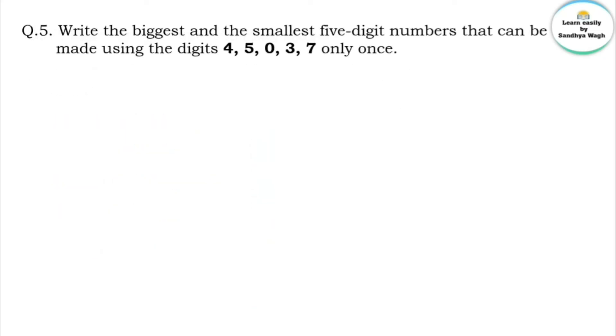Question 5: Write the biggest and the smallest 5-digit numbers that can be made using the digits 4, 5, 0, 3, 7 — each digit used only once.